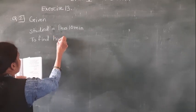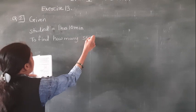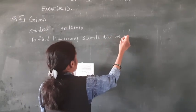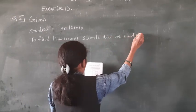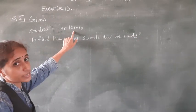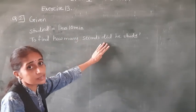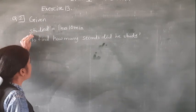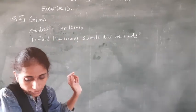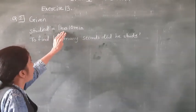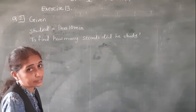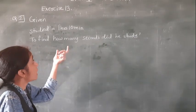How many seconds did he study? The given information is hours and minutes — he studied for 1 hour 10 minutes. And we have to find how many seconds he studied.